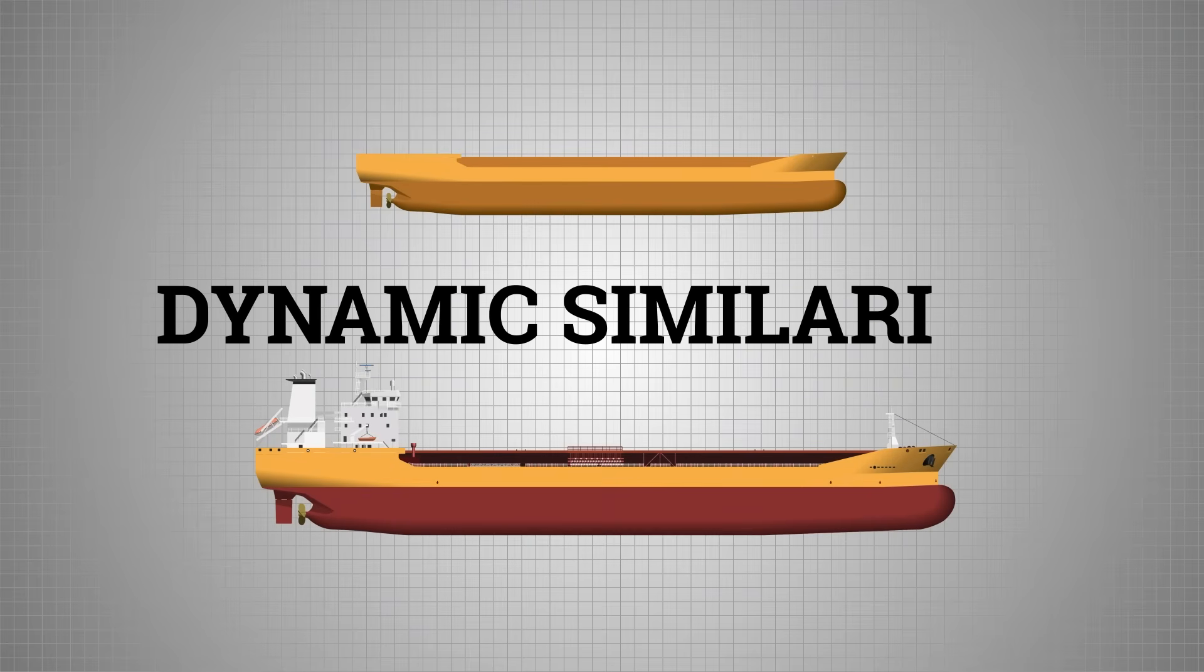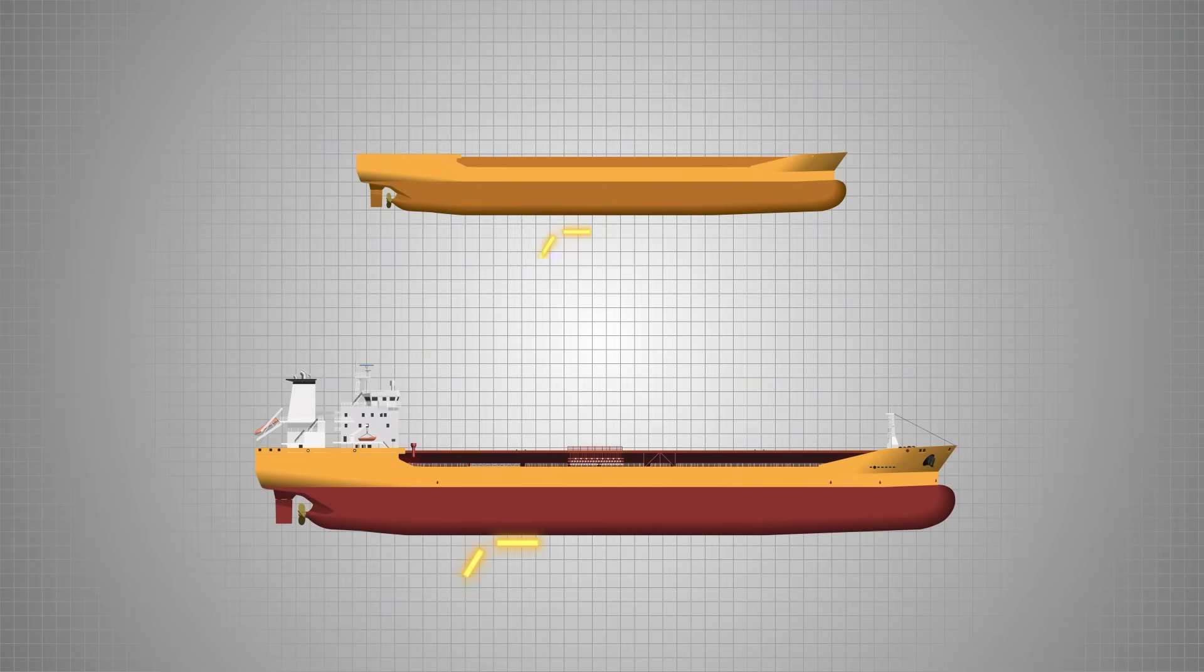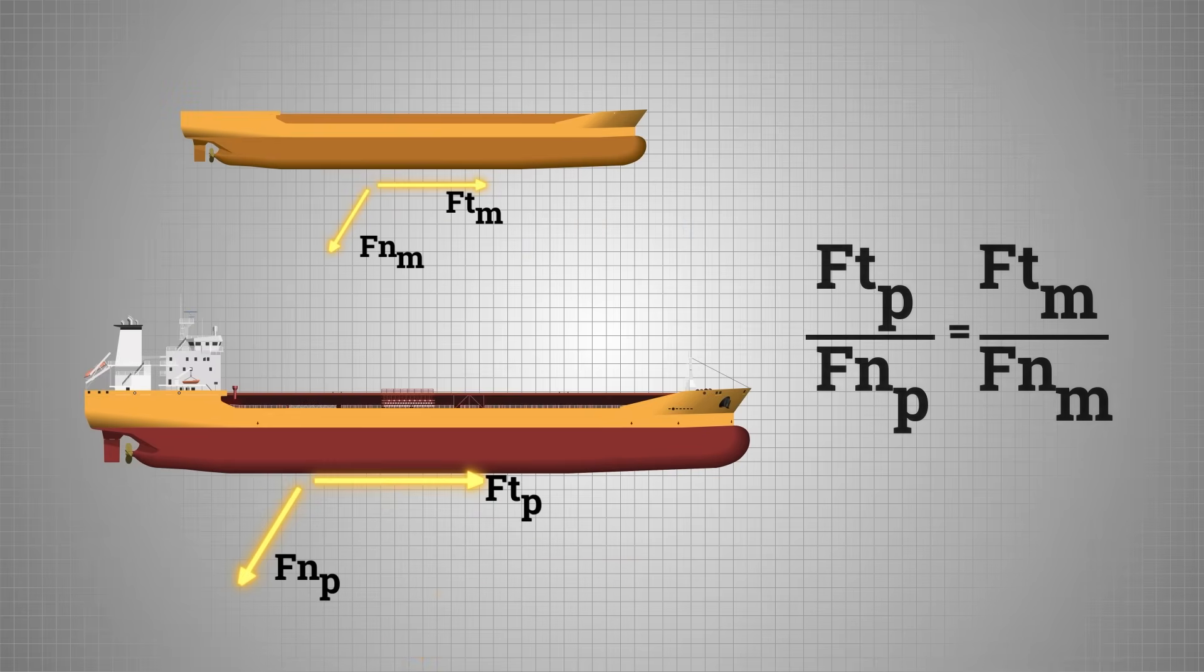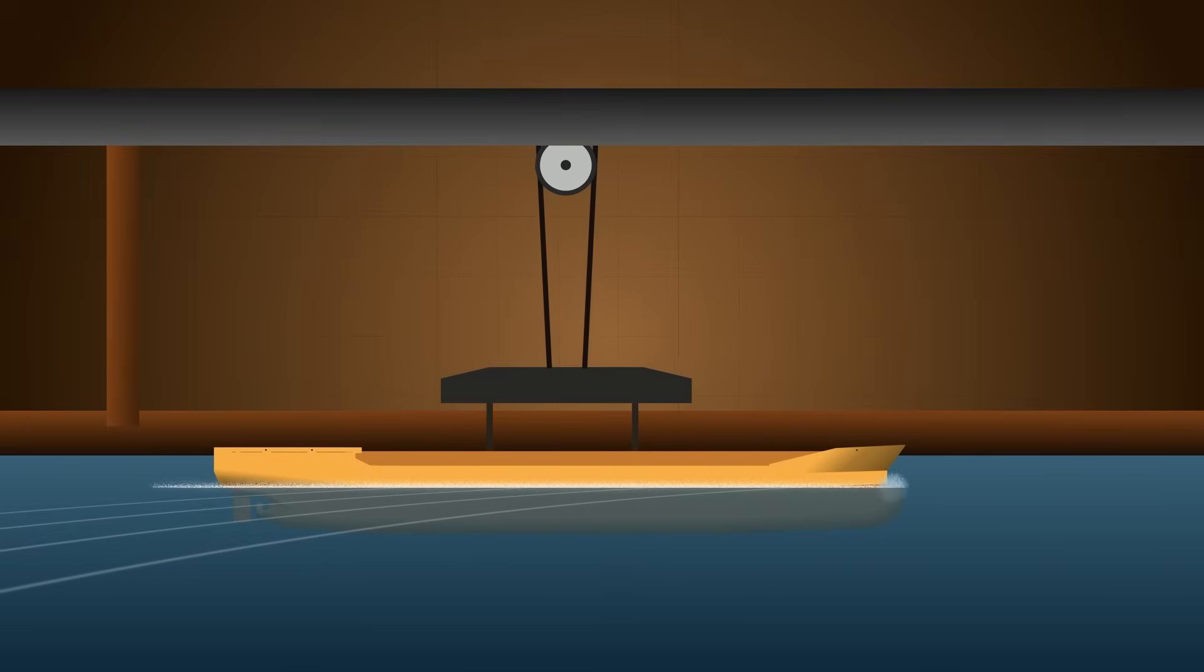Third, dynamic similarity. Now comes the hardest part. Forces. The push of water, the pull of gravity, the ship's own inertia. All these must be scaled down in perfect ratio. It's just like watching a slowed down version of the same event.